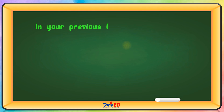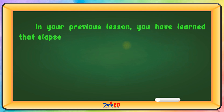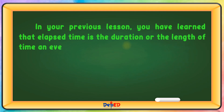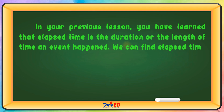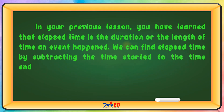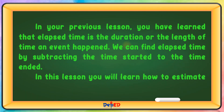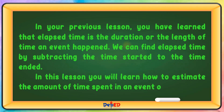In your previous lesson, you have learned that elapsed time is the duration or the length of time an event happened. We can find elapsed time by subtracting the time started from the time ended. In this lesson, you will learn how to estimate the amount of time spent in an event or activity.